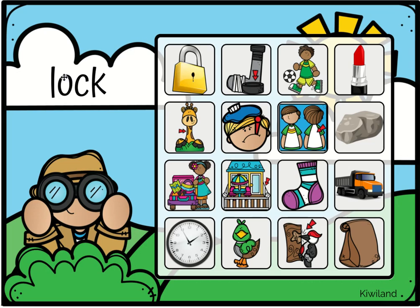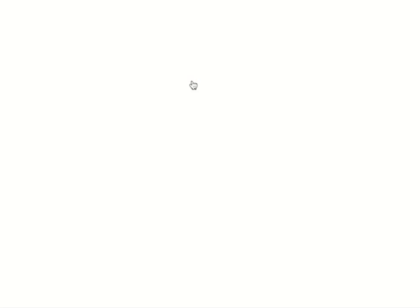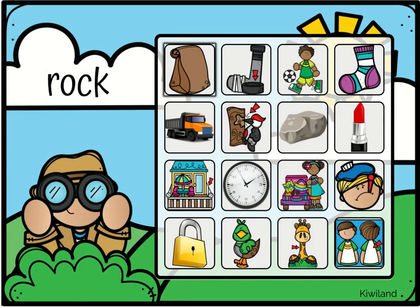I have another O, which makes the AH, AH sound — lock. My R will make an R sound. I have my short O, AH, AH, and my CK — R, AH, K — rock.